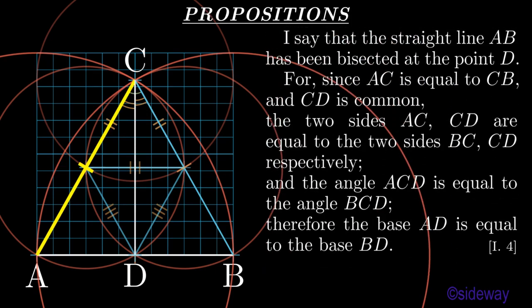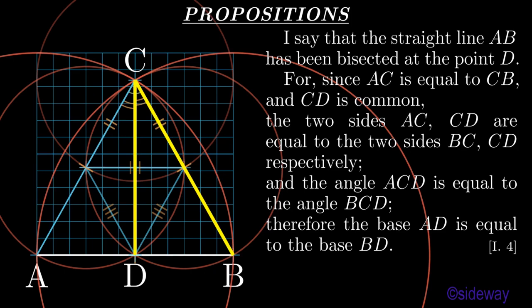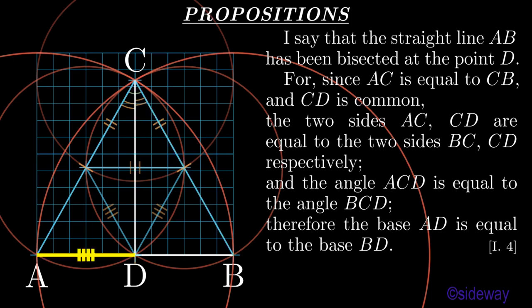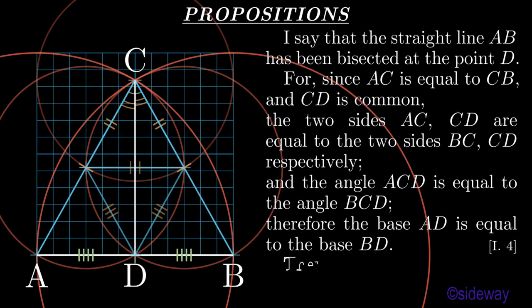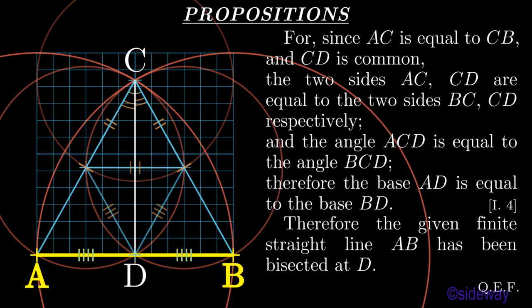For since AC is equal to CB and CD is common, the two sides AC, CD are equal to the two sides BC, CD respectively. And the angle ACD is equal to the angle BCD. Therefore the base AD is equal to the base BD, by Book 1 Proposition 4. Therefore the given finite straight line AB has been bisected at D. That which was to be done.